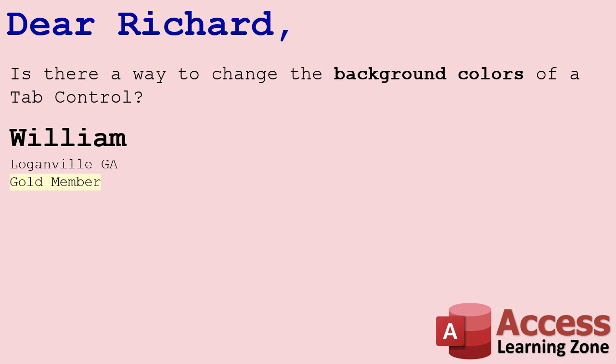Part two of this question is from William in Loganville, Georgia, one of my gold members. William wants to know if there's a way to change the background colors of the tab control. One of the things I don't like about tabs is there's no way to change the background color for each individual tab — all tabs must share the same background color unless you change them with VBA code, which I'll cover in the extended cut.